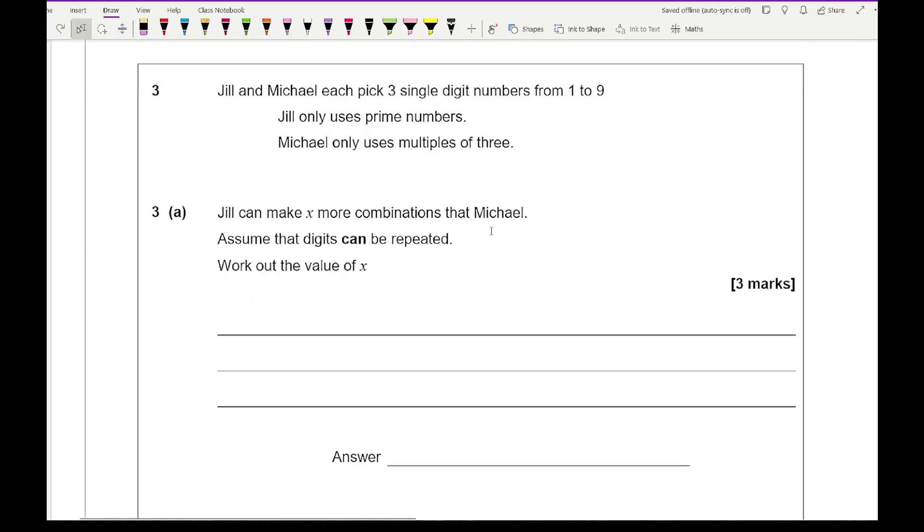Moving on to question 3, it says Jill and Michael each pick 3 single digit numbers from 1 to 9. Jill only uses prime numbers. Michael only uses multiples of 3. Jill can make x more combinations than Michael. Assume that the digits can be repeated. Work out the value of x. The key bit in this particular question is this bit here, which is why it's been written in bold, so numbers can be repeated.